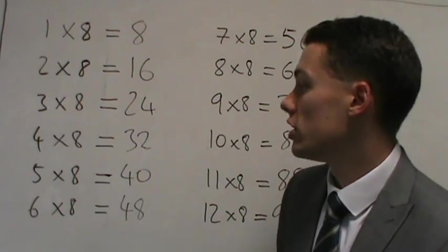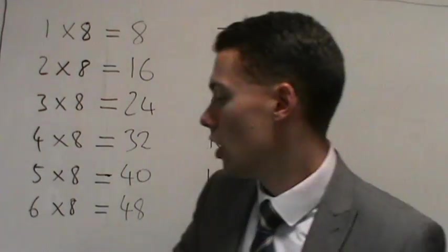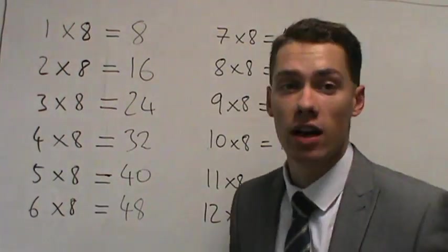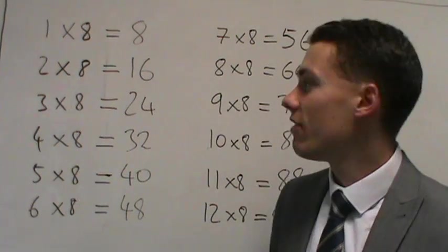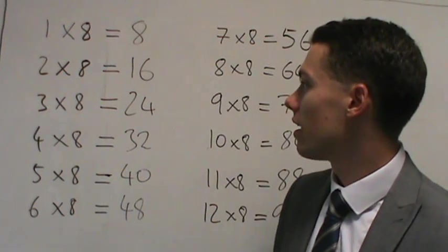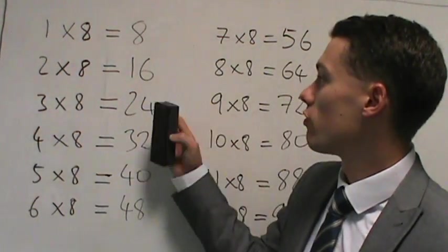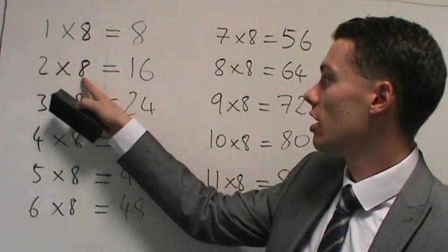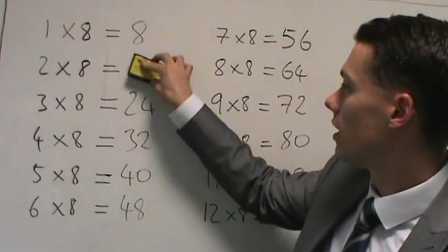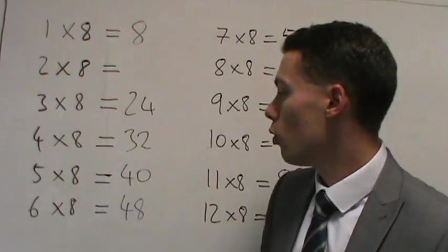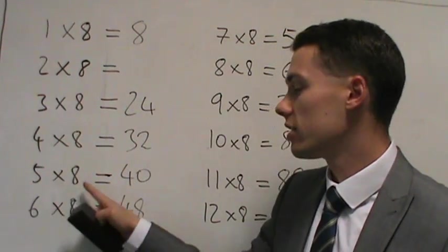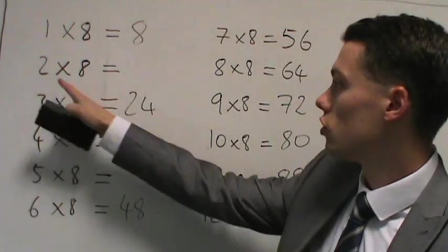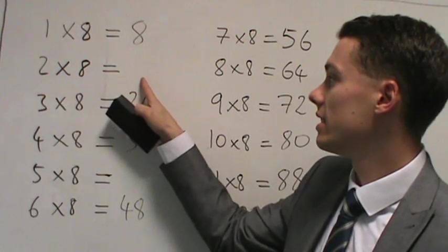So hopefully you'll pay attention there because we'll go through it again. But this time we're going to rub out two of the answers. And when I leave a blank space I'd like you please to say the correct answer. So I'm going to rub out 2 times 8 which is 16. And I'm also going to rub out 5 times 8 which is 40.